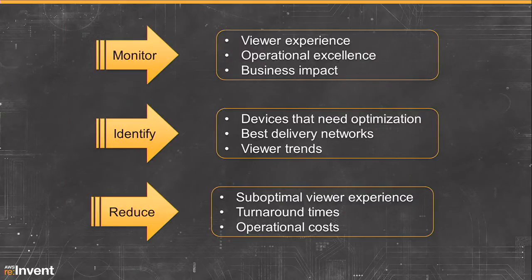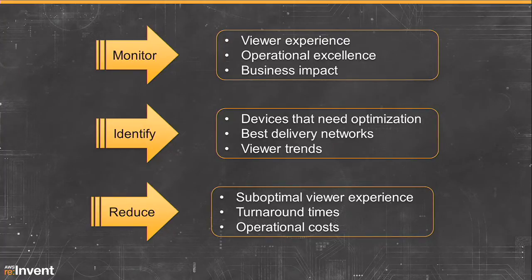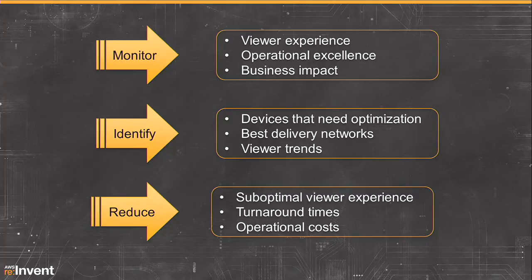We think the right way to do it is to think of three things. One is to monitor your end user experience — focus on what's important to the end user: what are they seeing, how are you operating, and what is the impact to your business? Second, from that monitoring, identify which devices need optimization, focus on where the best delivery networks are, and look at viewer trends. Third, look at ways to reduce costs, reduce turnaround time, and reduce the amount of viewers having trouble watching your content.